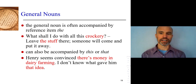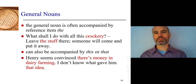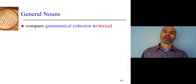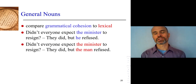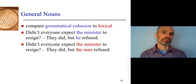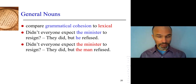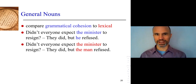You saw these examples earlier. You can see that there's no difference in meaning between 'he' and 'the man' — they are both interpreted as the minister. We have choice in how we talk and write. There's no difference in how they're interpreted, but there's a difference in how you should describe them: 'he' is a personal reference, and 'the man' — 'man' is a general noun.